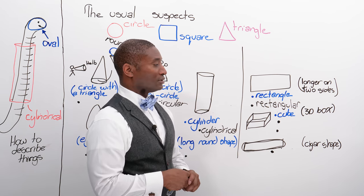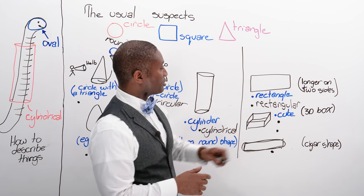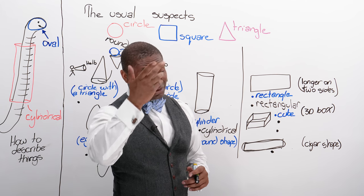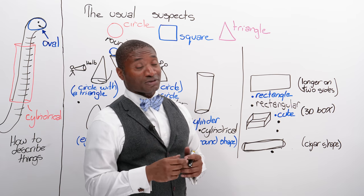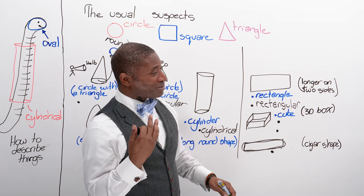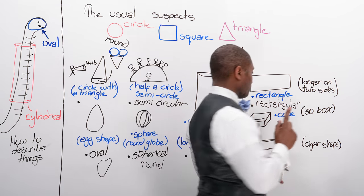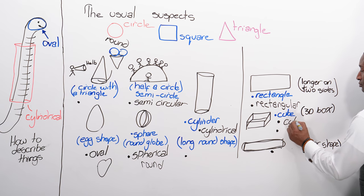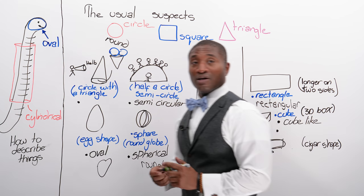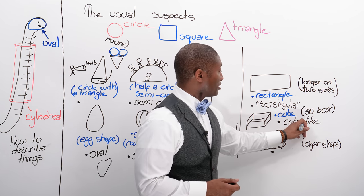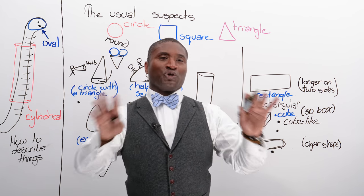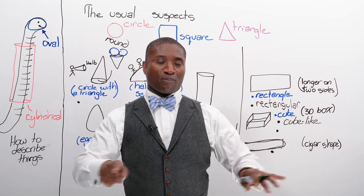Now, cube. A cube is a three-dimensional box. I wasn't able to get anything for a cube — I have oxo cubes at home but that doesn't count. A cube is three-dimensional. We don't usually say 'it's a cube' — we might say it's cube-like. Something is cube-like, meaning it's like a square or a box that's three-dimensional.